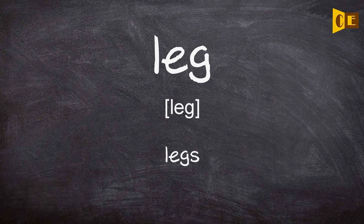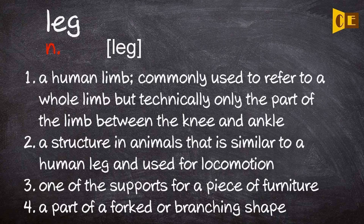Leg. Noun. 1. A human limb. Commonly used to refer to a whole limb but technically only the part of the limb between the knee and ankle. 2. A structure in animals that is similar to a human limb and used for locomotion. 3. One of the supports for a piece of furniture. 4. A part of a forked or branching shape.